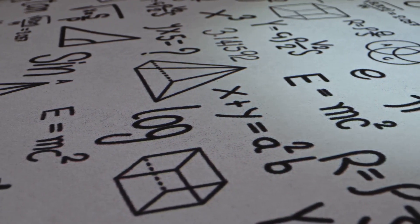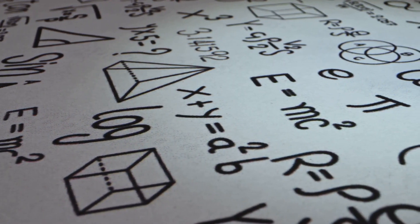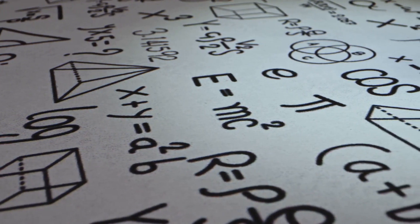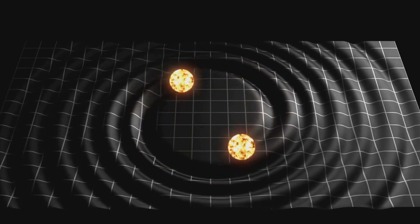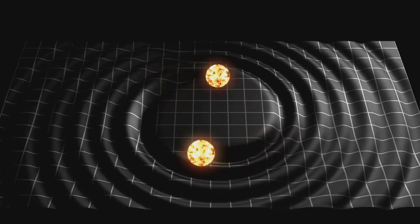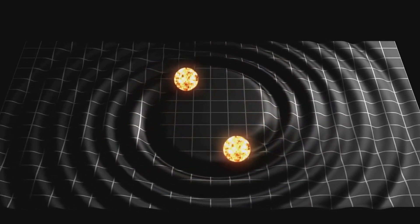Einstein's theories revealed that time is not the rigid, unchanging entity we once believed it to be. Instead, it is a dynamic and malleable aspect of the universe, subject to the influence of gravity and motion.